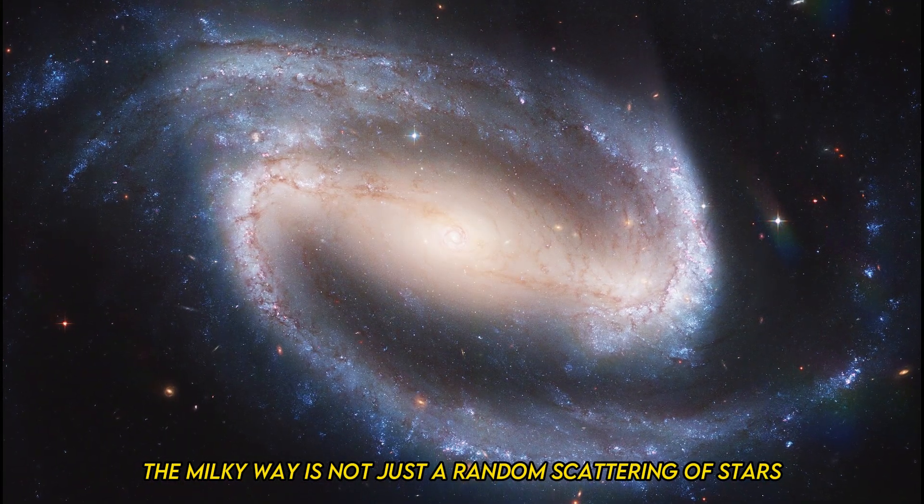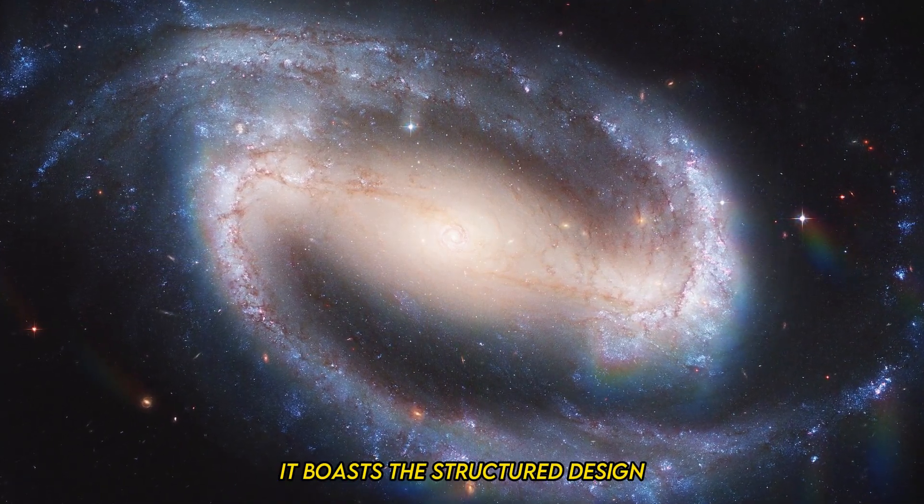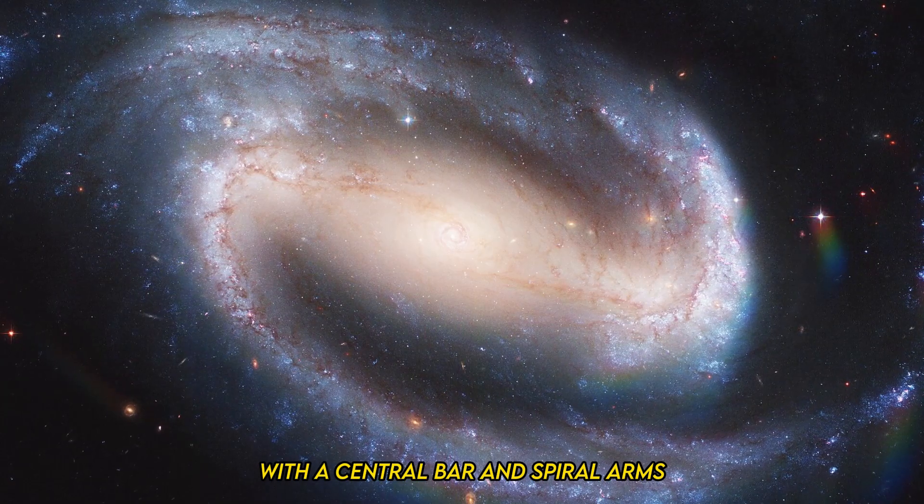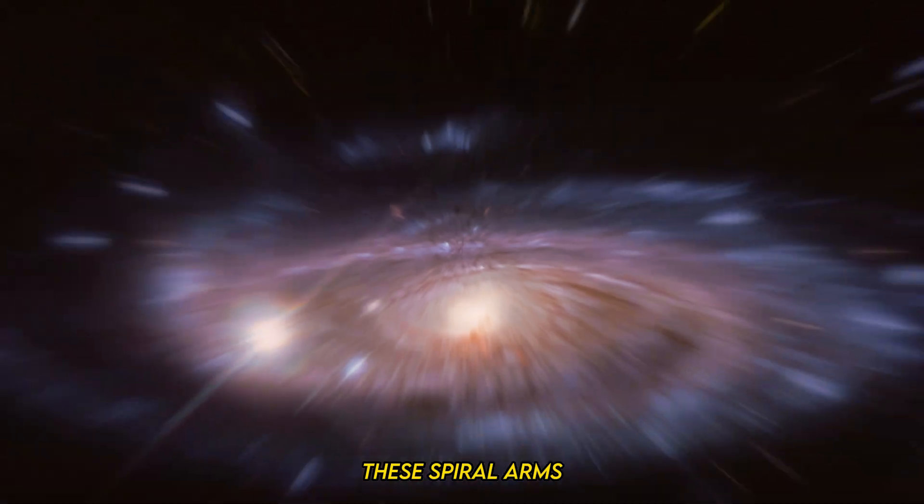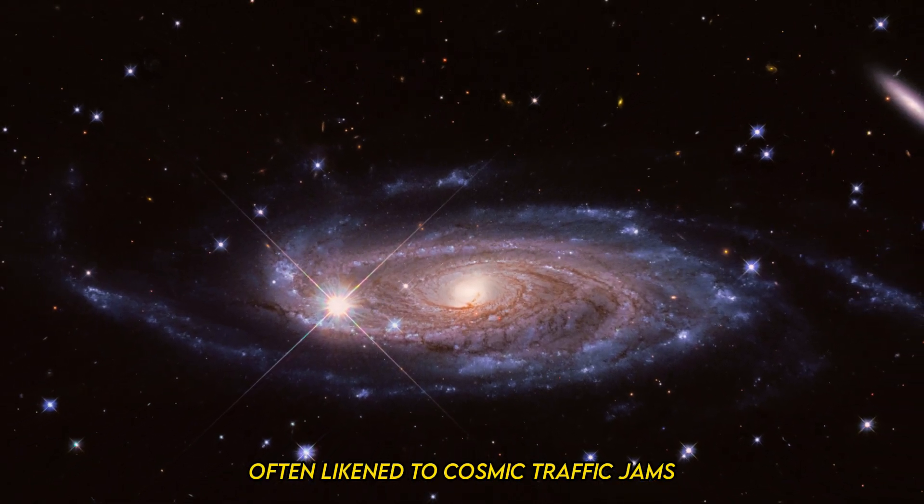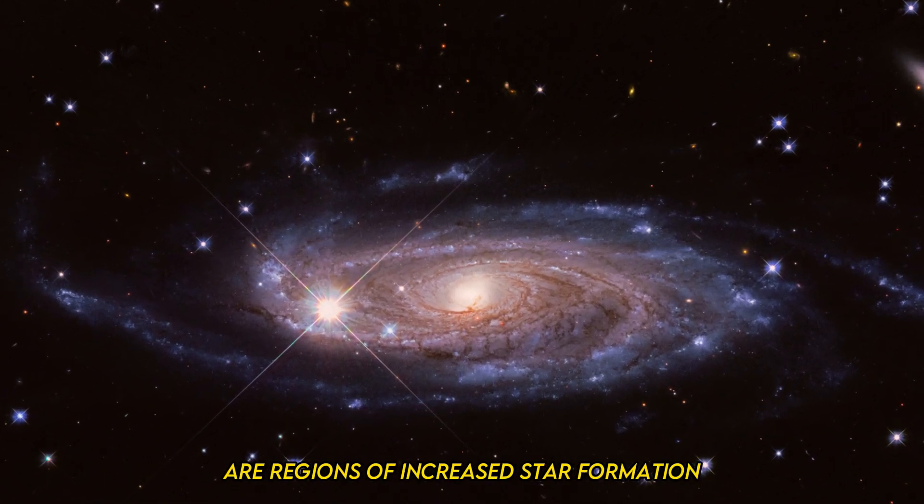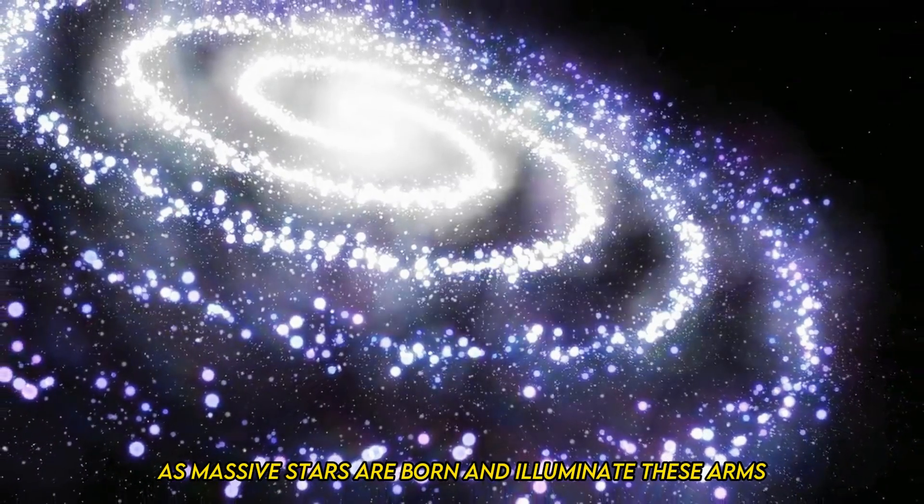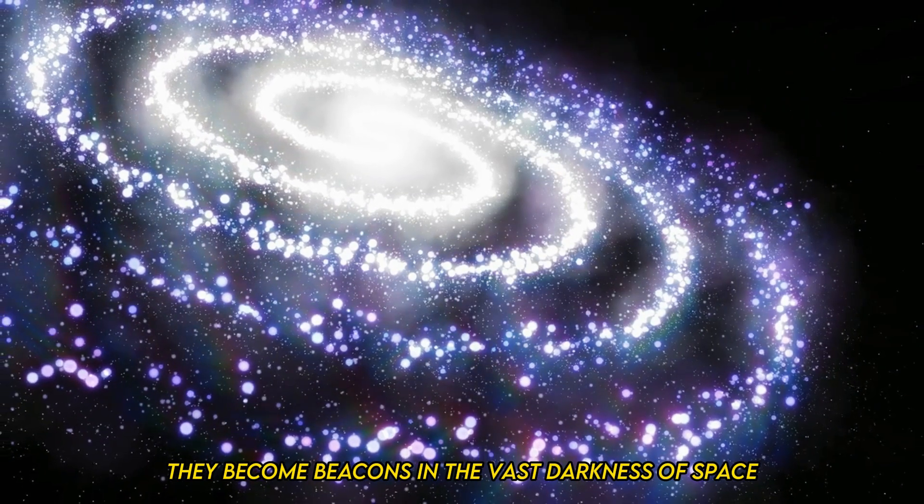The Milky Way is not just a random scattering of stars. It boasts a structured design with a central bar and spiral arms, much like a giant celestial pinwheel. These spiral arms, often likened to cosmic traffic jams, are regions of increased star formation. As massive stars are born and illuminate these arms, they become beacons in the vast darkness of space.